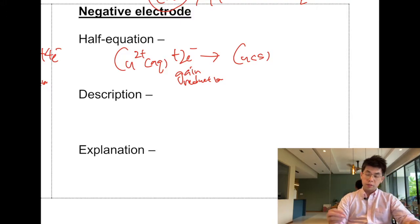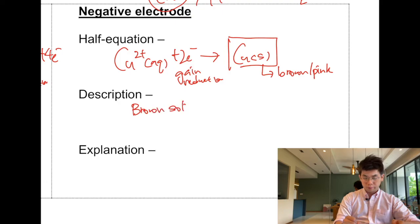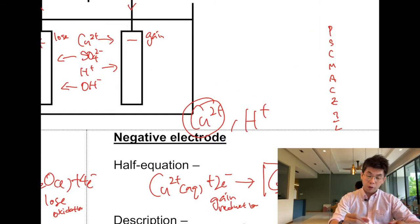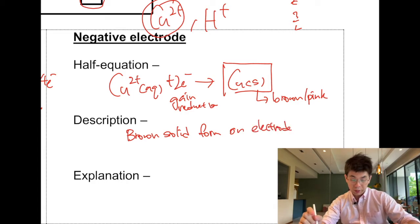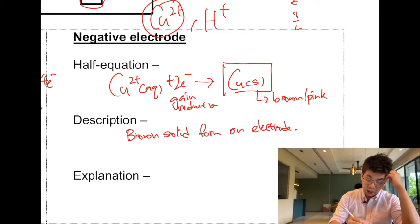Copper metal is a brown — or some call it pink — solid. So the description is that a brown solid will form on the negative electrode. The copper will slowly coat the electrode. Also, the electrode will gain in mass — it will get bigger and bigger.